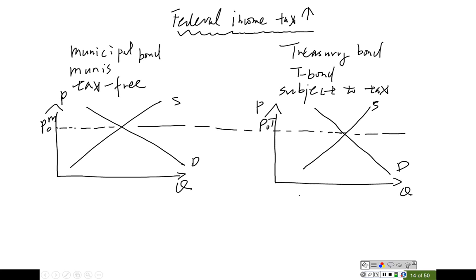However, for the T-bonds, if the tax increases, investors have to pay more tax on the interest they receive from the T-bonds, which means they will have a lower after-tax return because they have to pay more tax. But for the municipal bond, because it's tax-free, you can imagine they have a higher after-tax return.